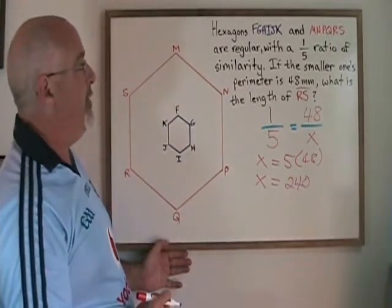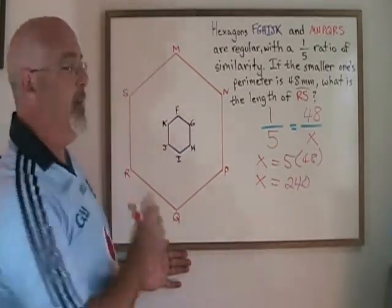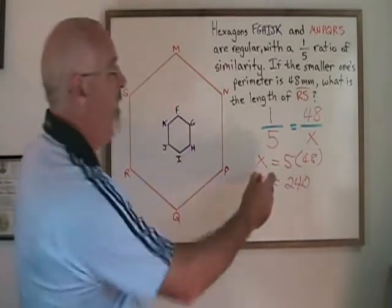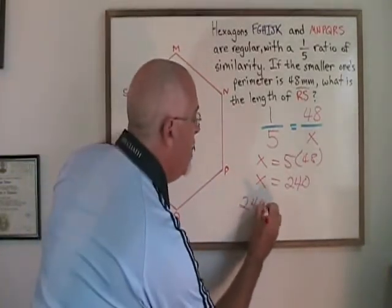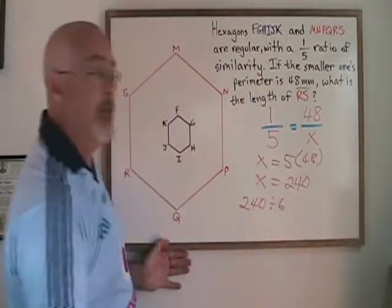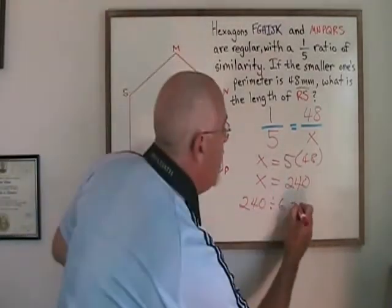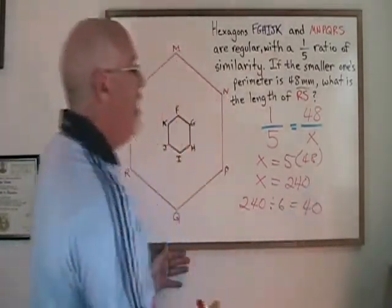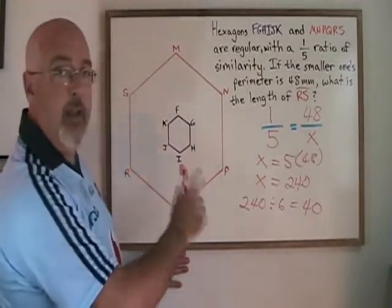The only step left is we were asked for the length of one side. So since it is a regular hexagon, we just have to divide 240 by 6, the number of sides in a hexagon, and we get 40. That is the length of side RS and the other sides.